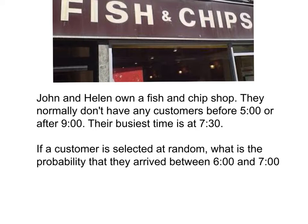Okay, so I've got a question here that we're going to look through. It's a triangular distribution question, and we're going to look through why and how we do it. It starts off: John and Helen own a fish and chip shop. They normally don't have any customers before 5 o'clock or after 9. Their busiest time is at 7:30. If a customer is selected at random, what is the probability they arrive between 6 and 7?